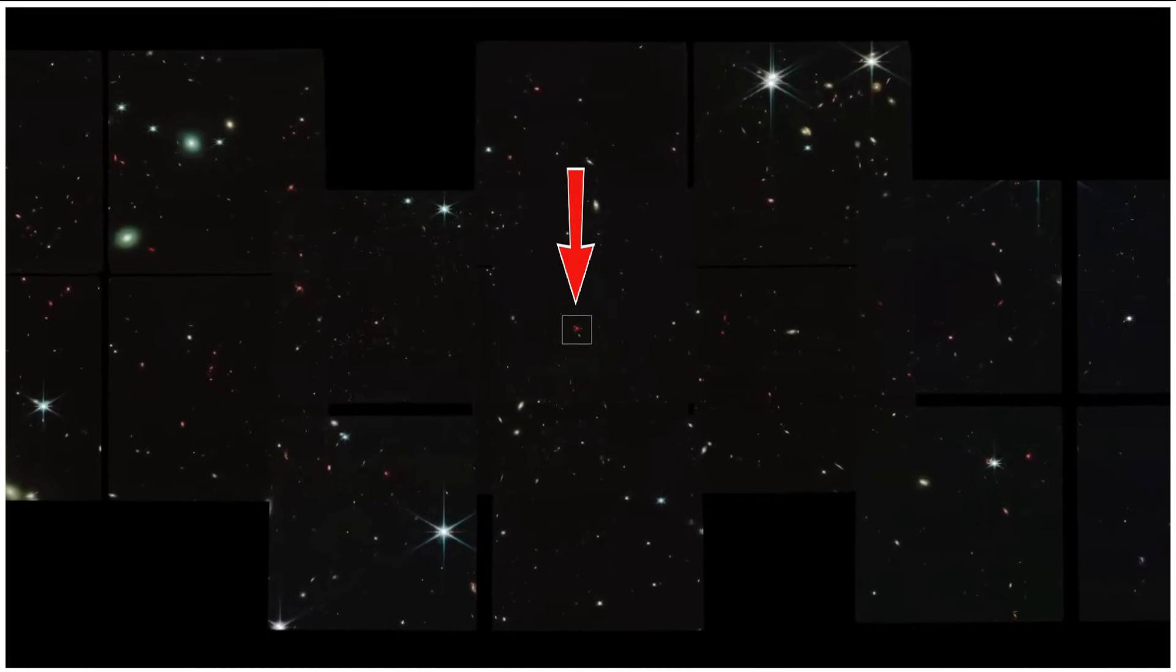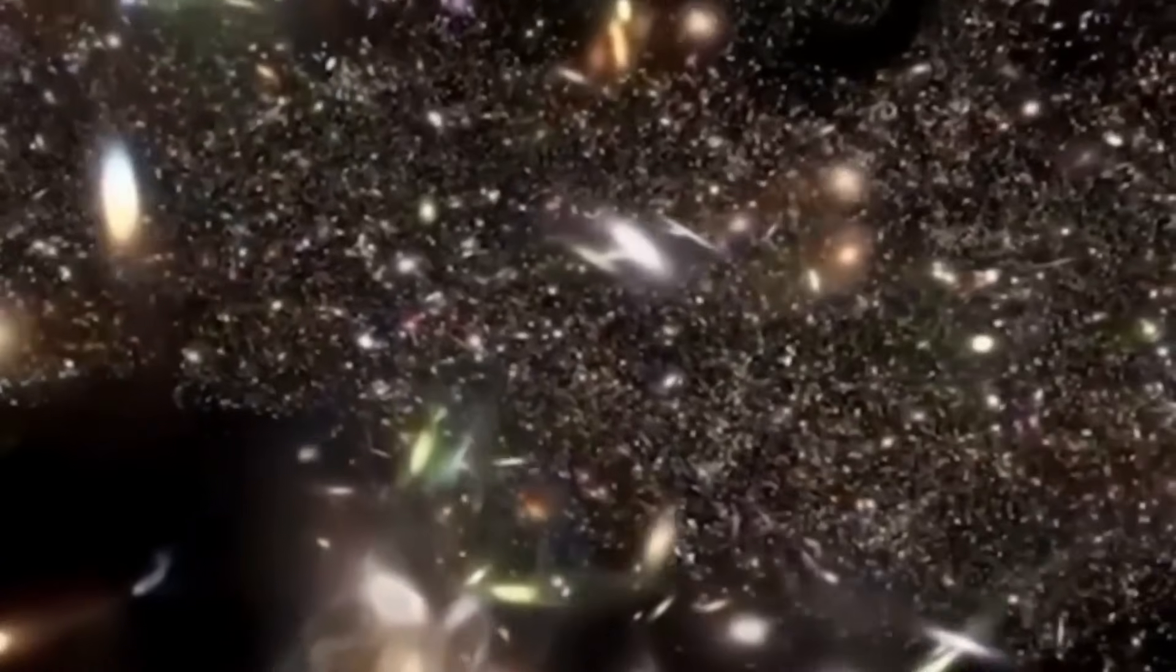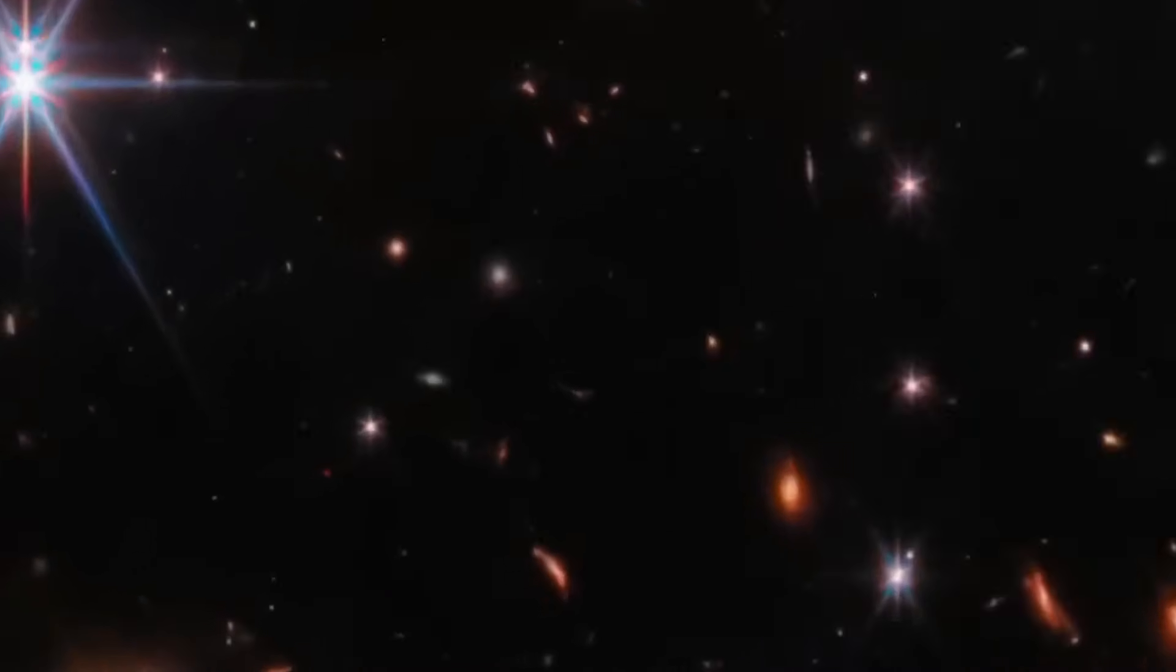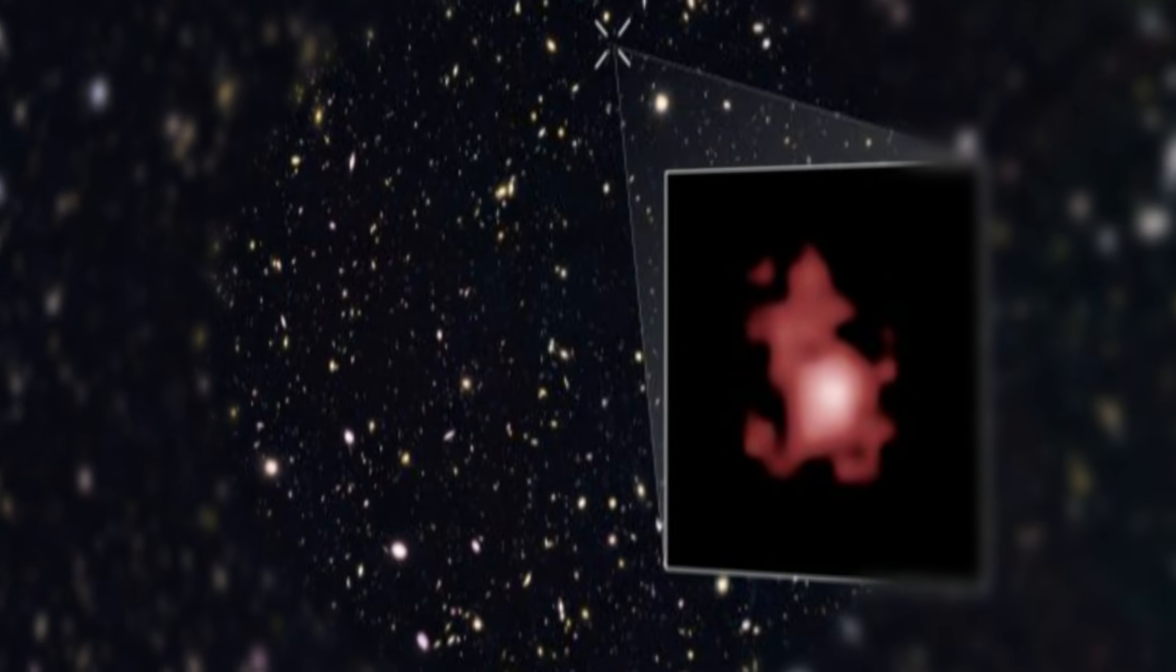If the universe undergoes endless cycles of creation and destruction, what does that imply about the passage of time? Is time linear, as we perceive it? Or is it cyclical, looping back on itself in an eternal dance of cosmic renewal?